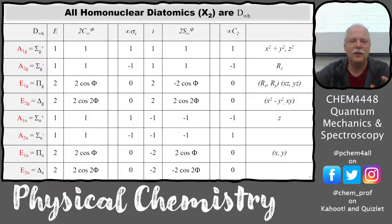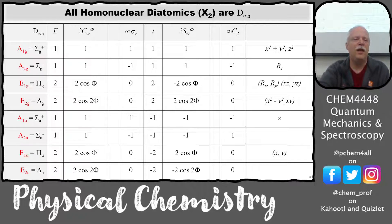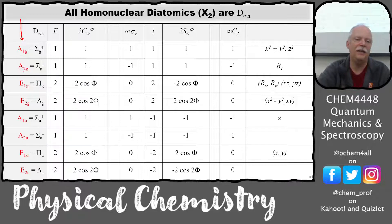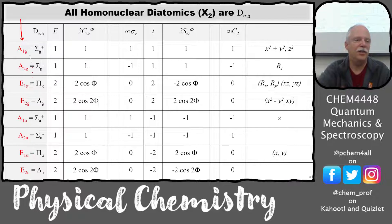We'll start with homonuclear diatomics — they're all D∞h. This is the D∞h character table. Pay close attention to the first column. These were the first molecules studied and they started out with capital Greek letters for their Mulliken notations. It became impossible to continue using those, so for bigger molecules they started using A's, B's, E's, and so on. I've made a little key showing that sigma G-plus is really A1G, sigma G-minus is A2G.